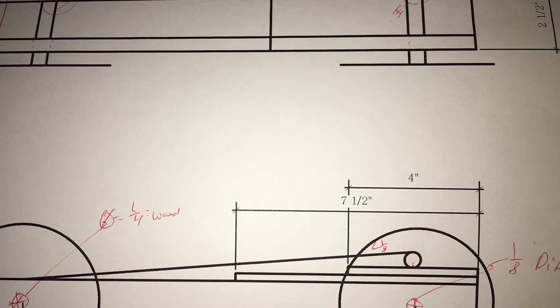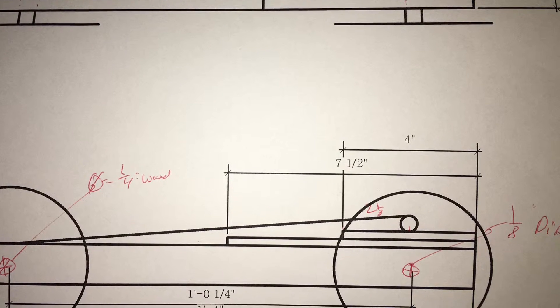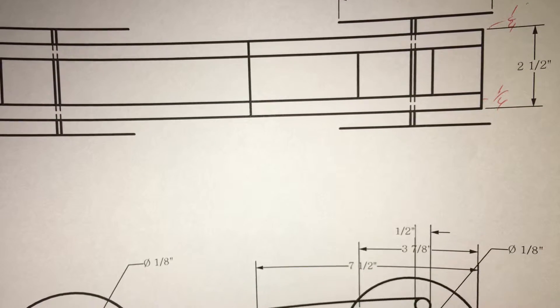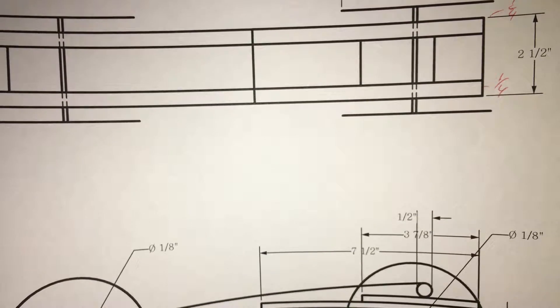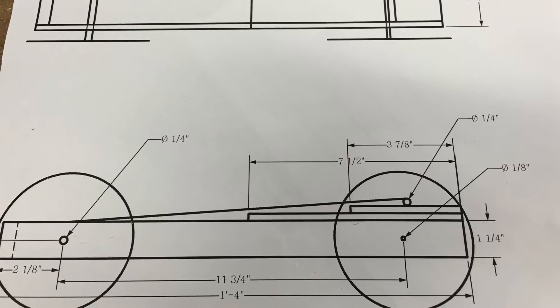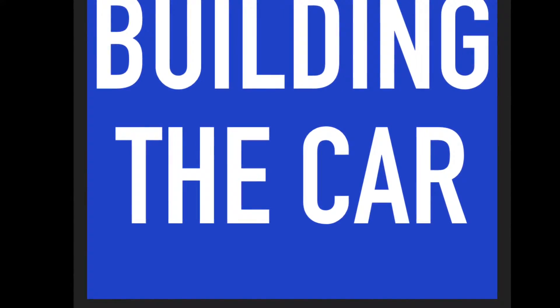The first step in making my mousetrap car was designing it and making a scale blueprint. I used Vectorworks to design a blueprint and it took me three tries before I made my blueprint perfect. I had to dimension the blueprint so I would know how long certain pieces were and add appropriately sized wheels. After I had finished designing my car, I was ready to build it.